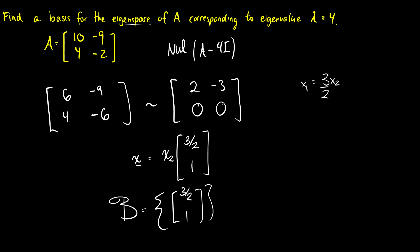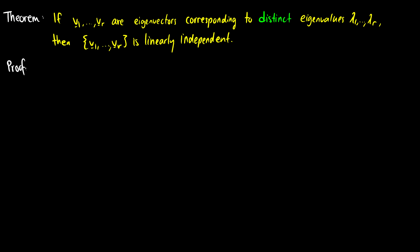The big point of this video is this proof: if we have vectors v1 through vr that are eigenvectors corresponding to distinct eigenvalues, then the set of eigenvectors is going to be linearly independent. We're going to do a proof by contradiction, so we assume that the set v1 through vr is linearly dependent.